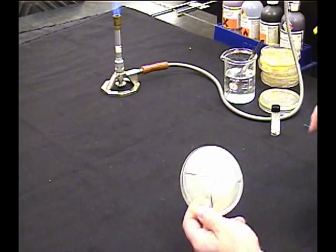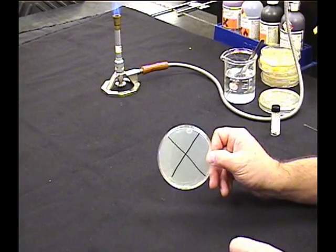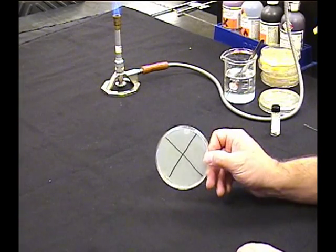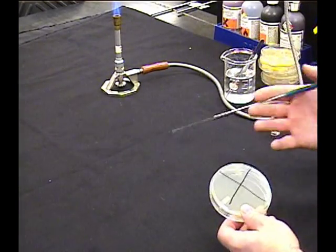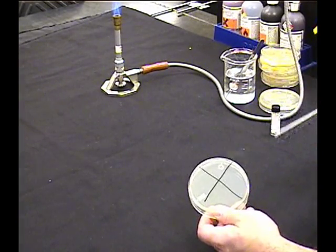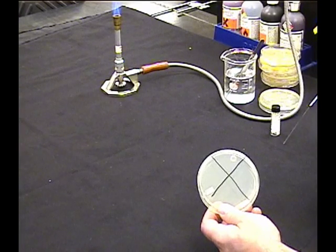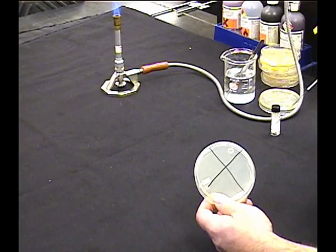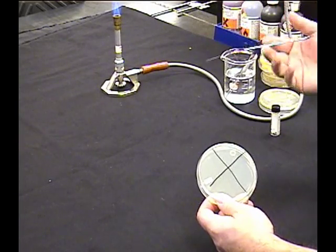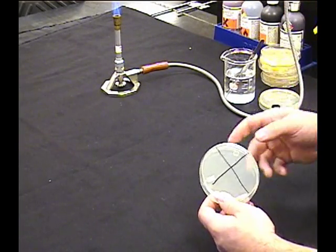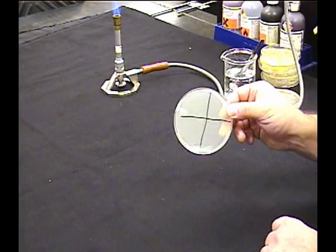Now we need to put organism on there. So what you're going to do is, again, using your loop, flame it, cool it, spread organism all over the surface, just like you did for the antibiotics. Once that's done, of course, you flame your loop, cool your loop, dump it.